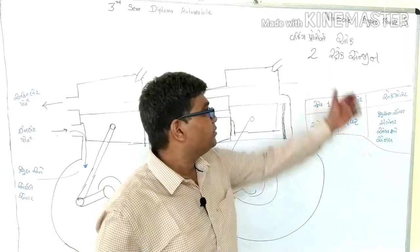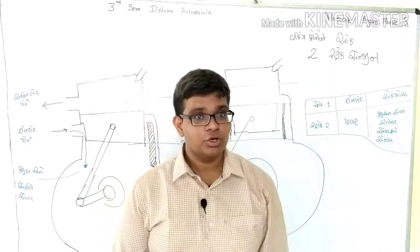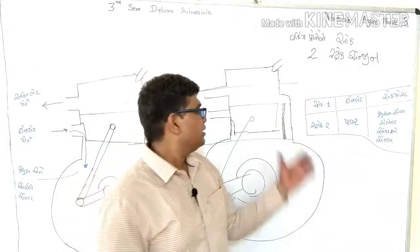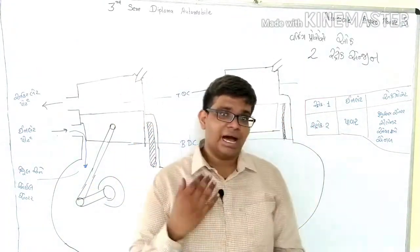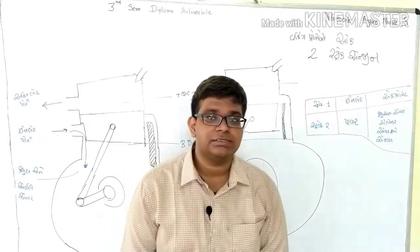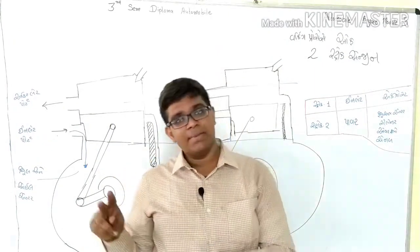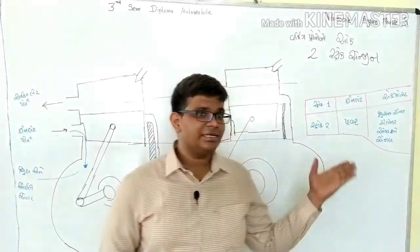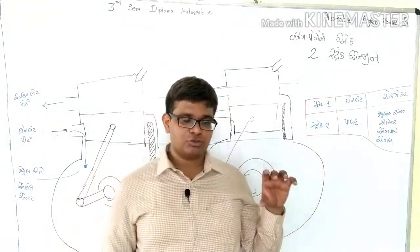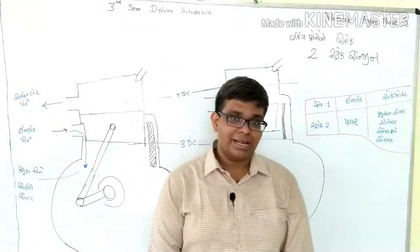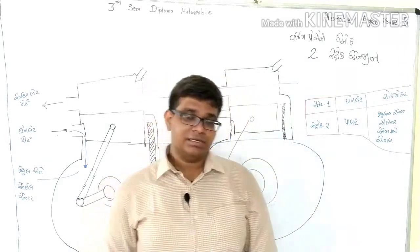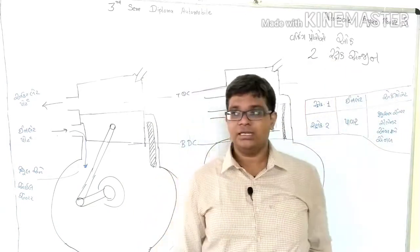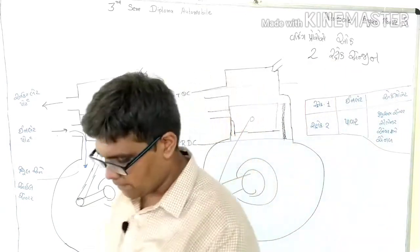In today's video we have the 2-stroke engine. The 2-stroke engine is very important, so we will cover its working process. There are 4 processes in the 2-stroke engine, and every two strokes we get a power stroke. Let's check the figure.